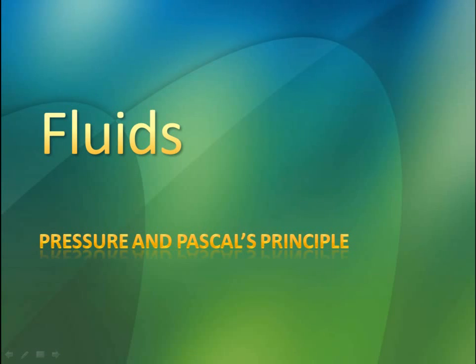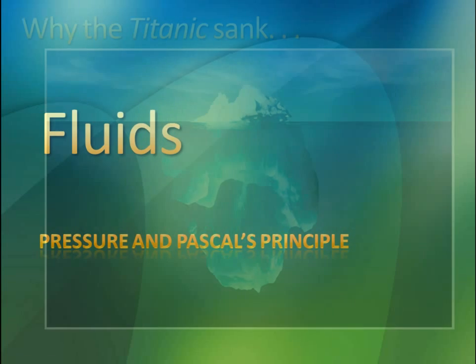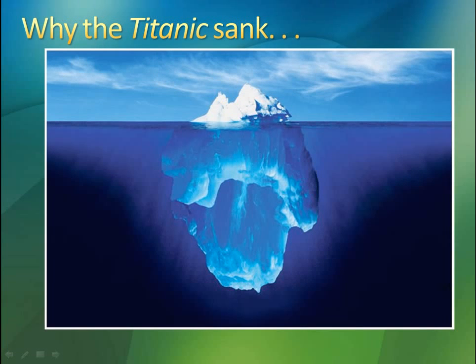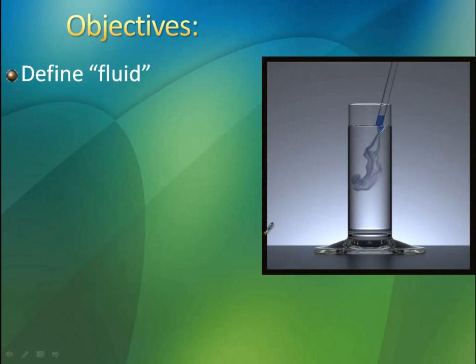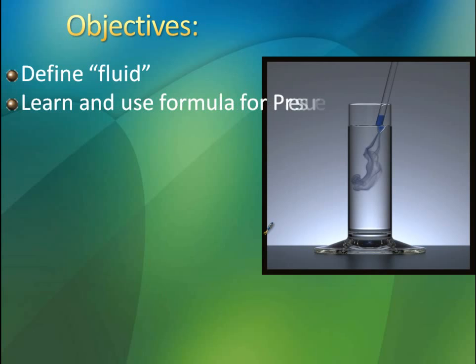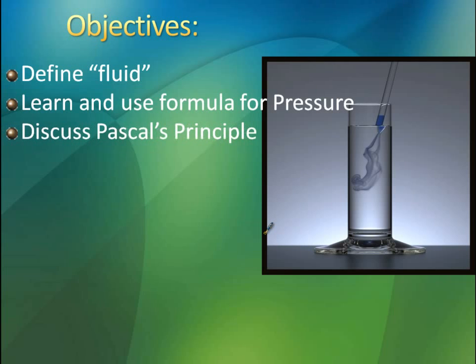Alright, today we're going to talk about fluids and specifically pressure in Pascal's principle. And through this unit we're going to discover why the Titanic sank. So Titanic sank basically because they see this much above the water, they're like oh it's pretty small. But you actually have all this below it, and that spells bad news for ships. But we're going to learn why eventually. In this podcast we're going to define fluid, learn and use formula for pressure, discuss Pascal's principle, and derive an equation for Pascal's principle.